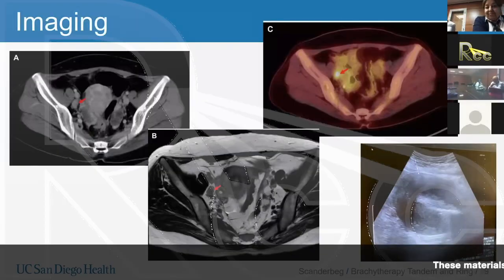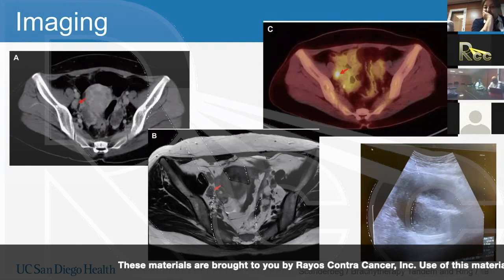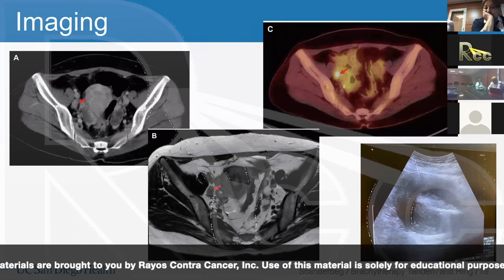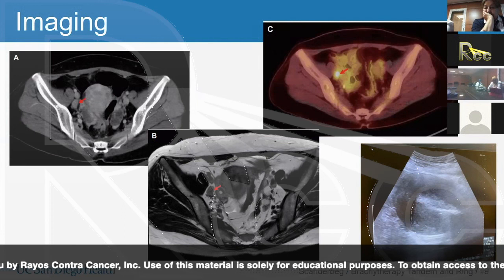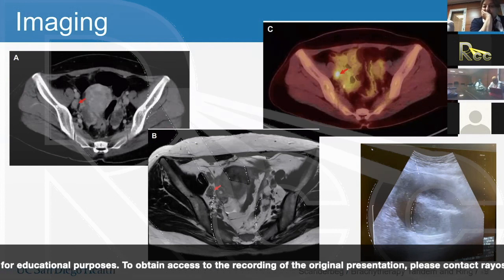PET is often used in the initial workup of patients with cervical cancer. It's useful to confirm findings by other imaging modalities such as CT and MRI, as well as assessing lymph node involvement, thus guiding treatment options. PET is much more sensitive than CT and MRI in that it can pick up lymph node abnormalities as small as about six millimeters, whereas a CT scan usually requires nodes one centimeter or greater.